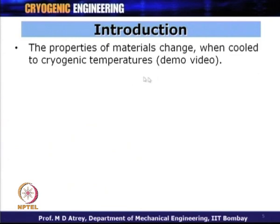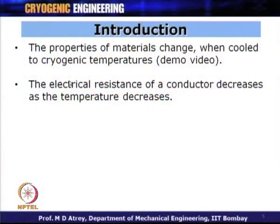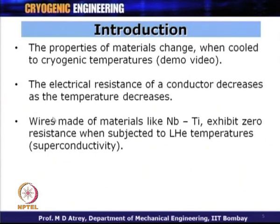As we have seen in a video, the properties of materials change drastically when cooled to cryogenic temperatures — materials like rubber and potato behaved differently at low temperature. The electrical resistance of a conductor decreases as temperature decreases; the material becomes more and more electrically conductive and finally becomes superconductive. For example, wires made of niobium-titanium alloy exhibit zero resistance when subjected to liquid helium temperatures — that is, 4.2 Kelvin — and the material becomes superconducting.